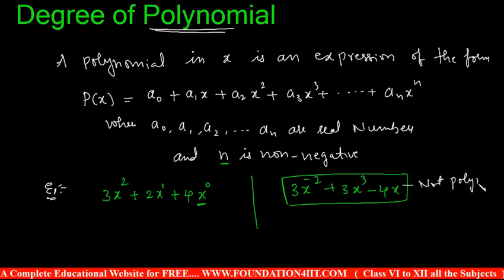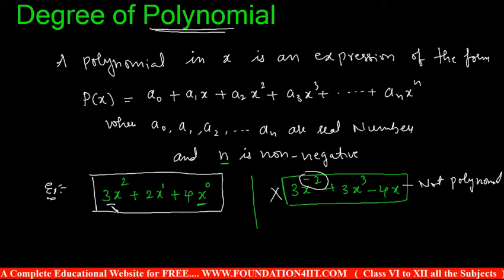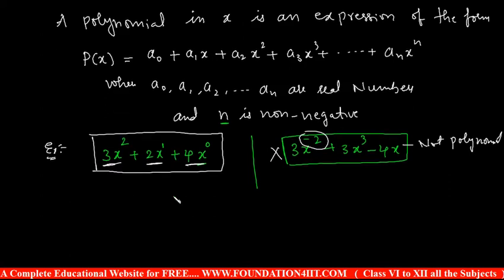That is an important rule: this is not an example of a polynomial because there is a negative power. The condition is n must be non-negative. Now let us see some types of polynomials. If there is only a single term, it is called a monomial — for example, in 3x² − 2x + 4 there are three terms, but a polynomial having only one term is a monomial.